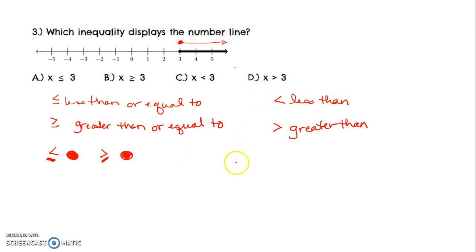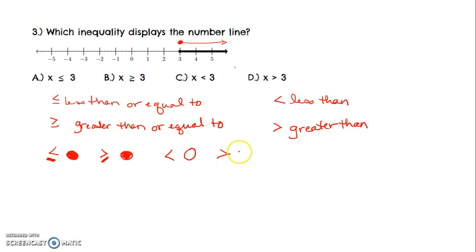For less than, I need an open circle. I needed no extra pen here, so less than will be an open circle. Greater than — again, I do my open circle, I didn't need any extra pen, so I don't need to shade it in. So less than is an open circle, and greater than is an open circle.